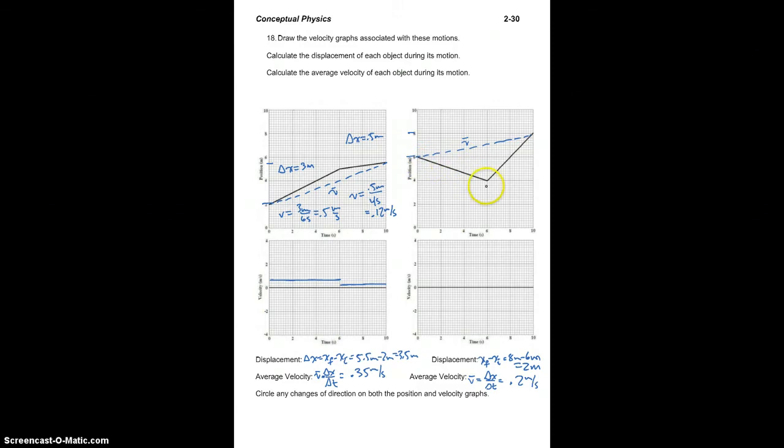Over on the other graph, in the first segment, our displacement is negative 2 meters. The time is 6 seconds, so the velocity is negative one-third meter per second.